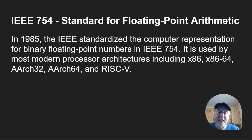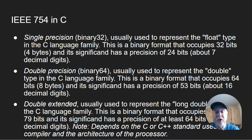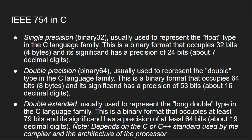There is a standard called the IEEE 754 standard for floating point arithmetic, invented in 1985, standardizing how a computer should represent a floating point number in binary. It's used in modern processors including x86, x86-64, ARM32, ARM64, RISC-V, and so on. In C, using single precision — generally called a float — gives you a 32-bit floating point number. Using a double gives a 64-bit floating point number. You can also use a long double, which occupies at least 79 bits with at least 64 bits of precision, depending on the C standard, compiler, and processor architecture.